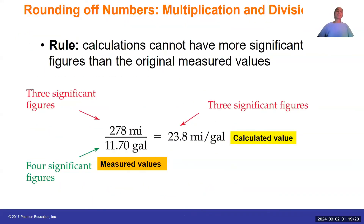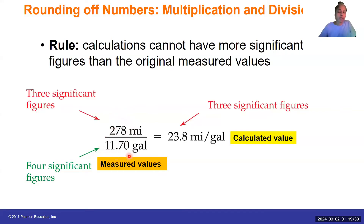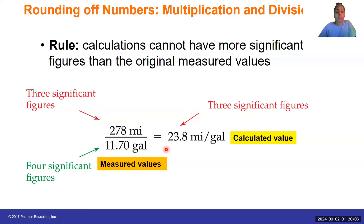Now let's take a look at rounding off when doing multiplication and division. The rule is that your calculations cannot have more significant figures than the original measured values. Before starting the calculation, count the number of sig figs in both measured values. We've got three significant figures in 278 miles and four significant figures in 11.70 gallons. We get a larger value from the calculator, but we've got to round off to three significant figures, because that's the least number of significant figures.